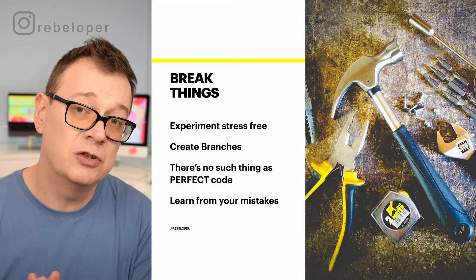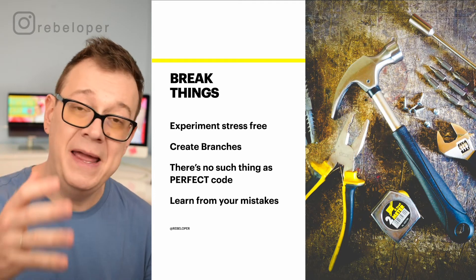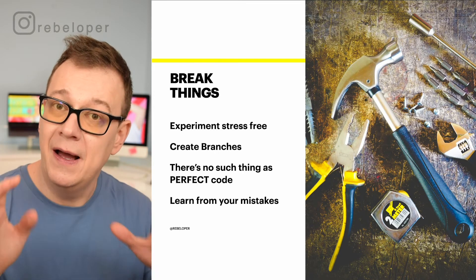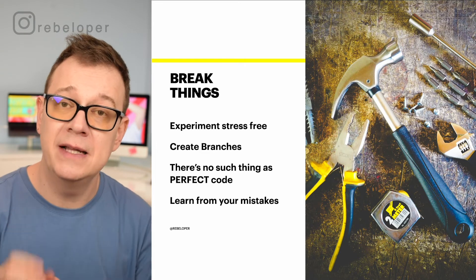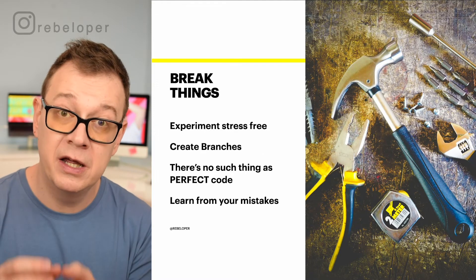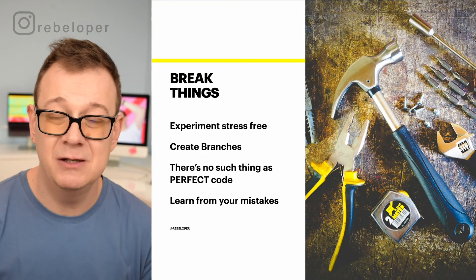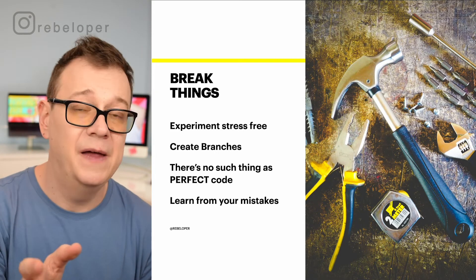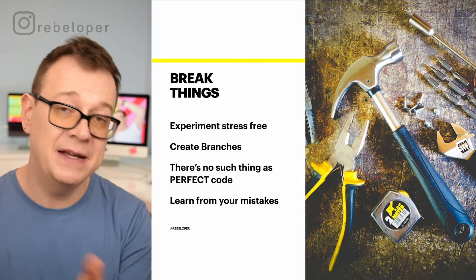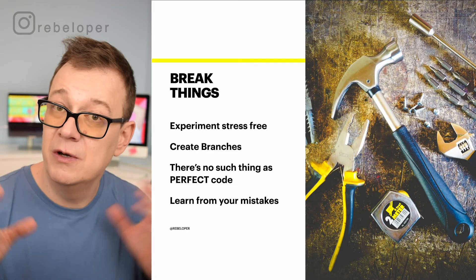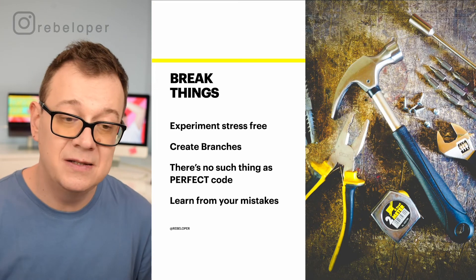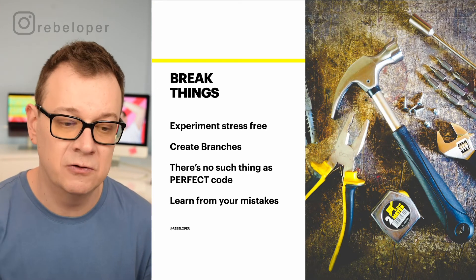Why is source control so important? You can break things and experiment stress-free. If you have working code but want to try a new feature, you don't want to tinker with what's already working. So you create a new branch from main, experiment, let things break, learn from them, fix them — and once you're satisfied, you merge that branch back into main. That's why it's really awesome to have source control.